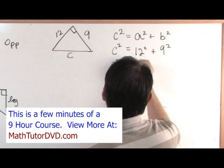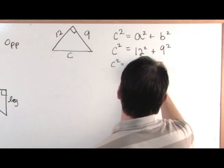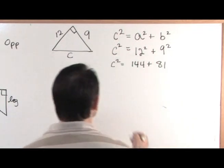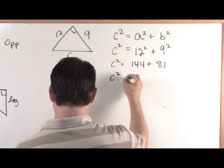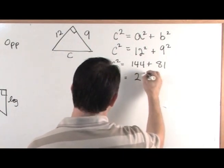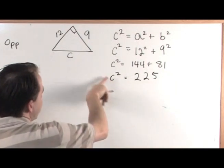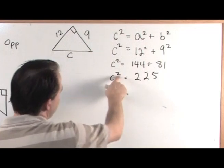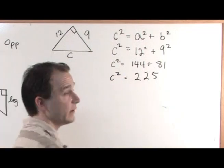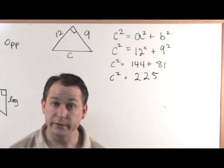Then C squared equals 144 plus 81. So C squared equals 225. Now you know what C squared is, but in order to find C, when you're solving this equation, you do the opposite. The opposite of a square is a square root.